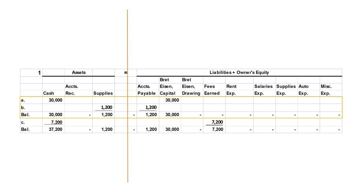The next transaction: $7,200 was earned, and customers paid the company in cash. So we debit cash for $7,200, increasing cash, and we credit fees earned for $7,200, increasing fees earned.